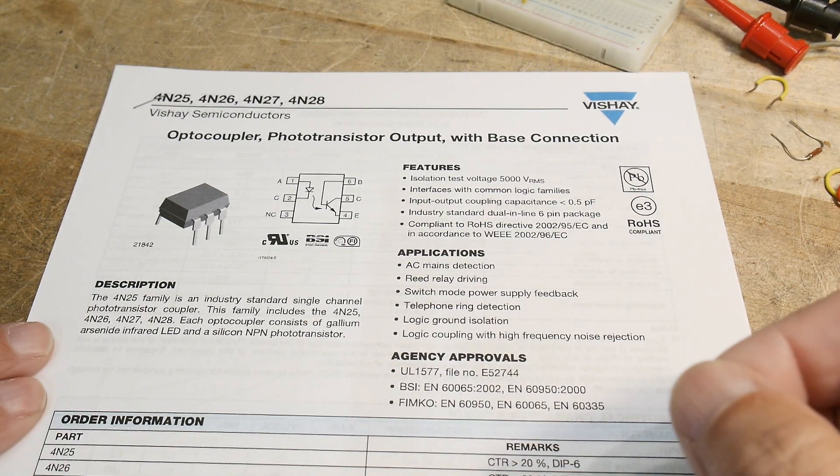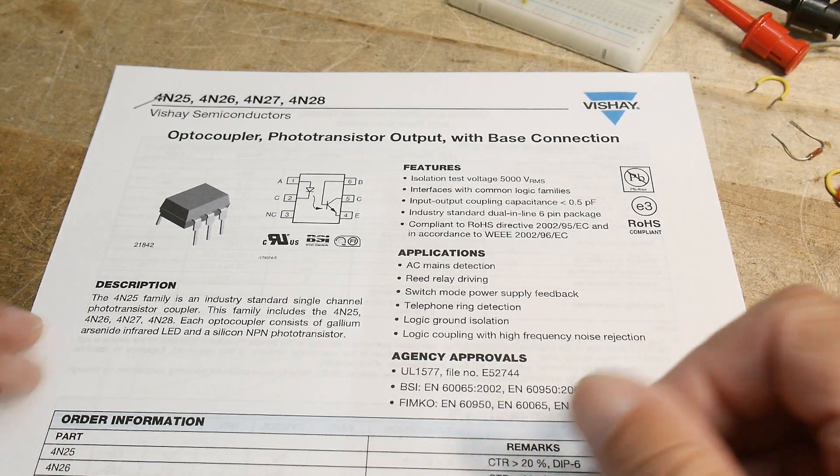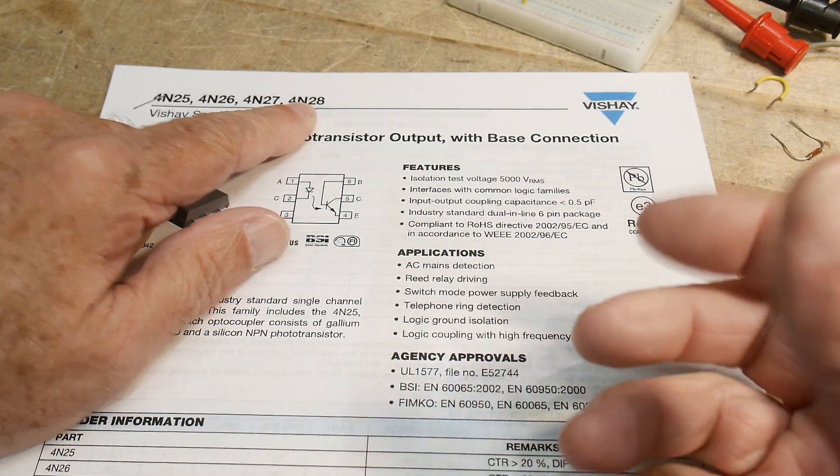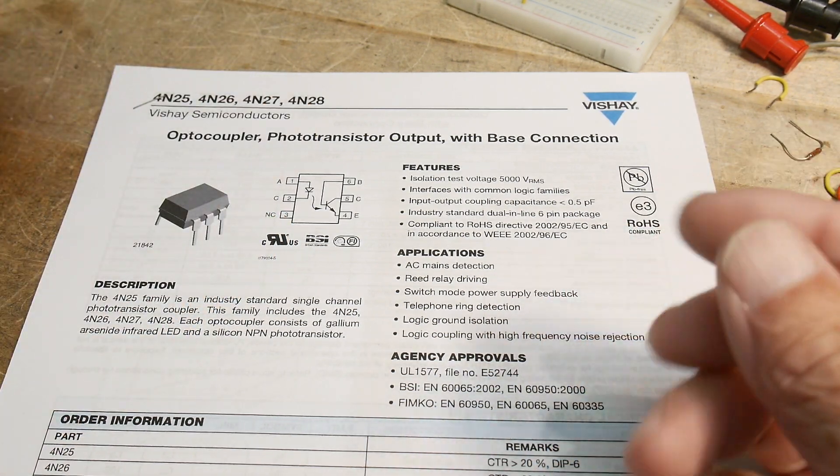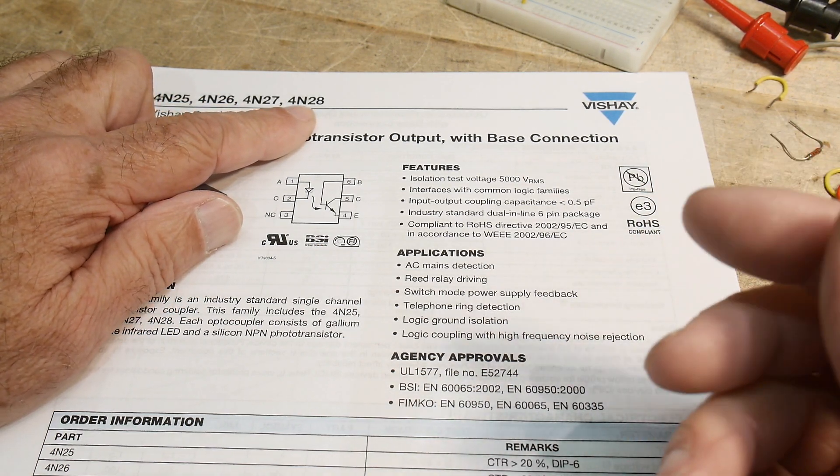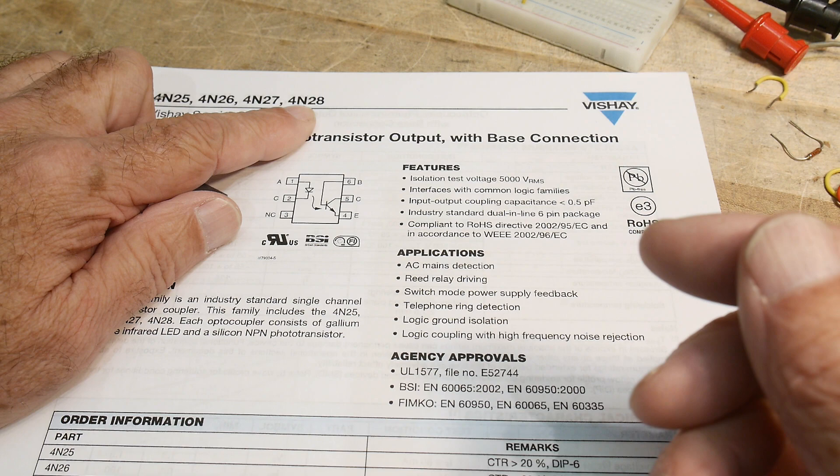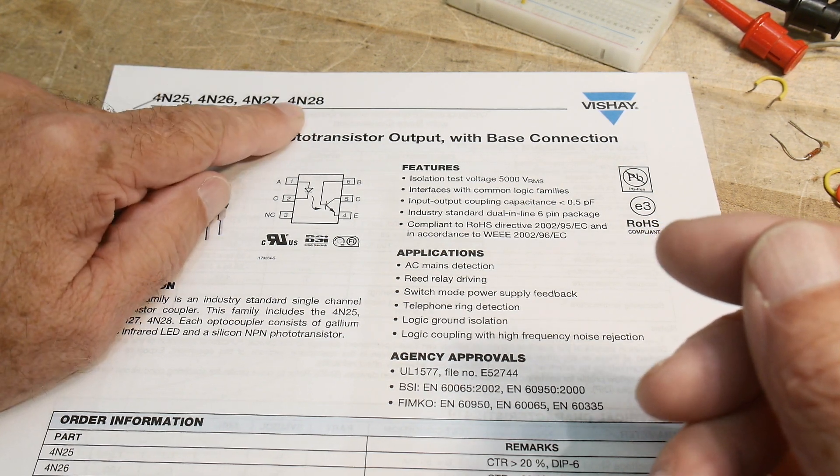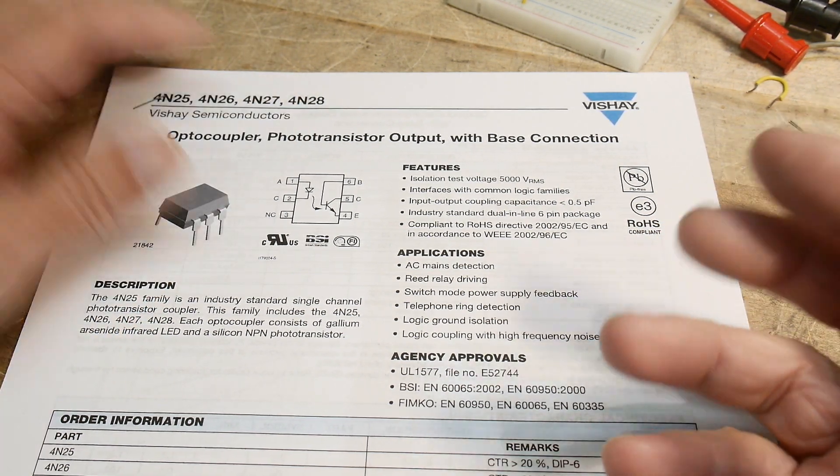All right, chip of the day. Everybody loves chip of the day. It's a chip of the day as a 4N28. So you might know transistors start with 2N, like 2N3904, 2N2907, 2N2222A, but 4N devices are optocouplers, 4N.